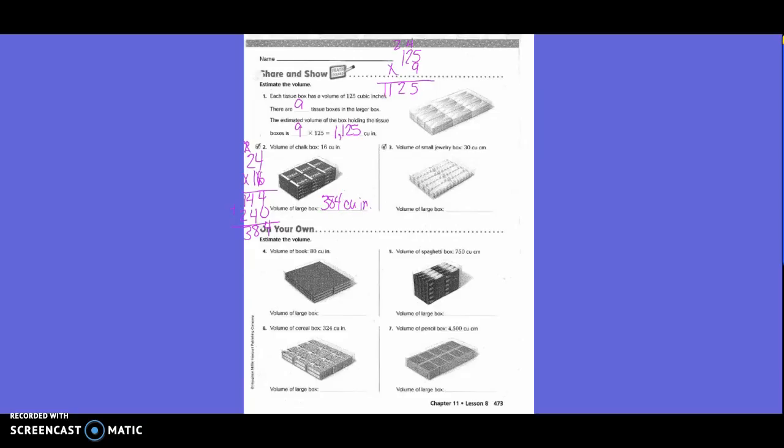The volume of a small jewelry box is 30 cubic centimeters. So one of those little boxes in the big box is 30 cubic centimeters. So how many are there? 10. There's just one layer. So we would do 30 times 10 and get 300 cubic centimeters.